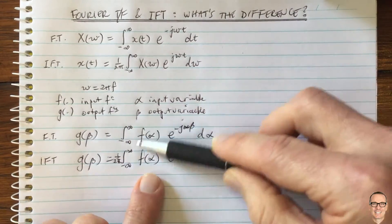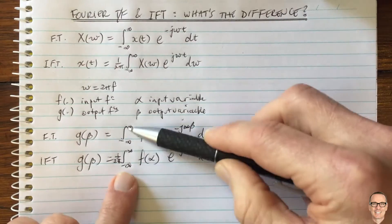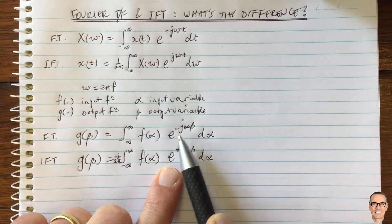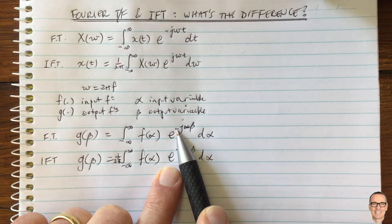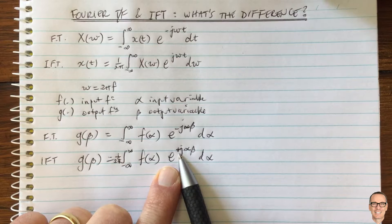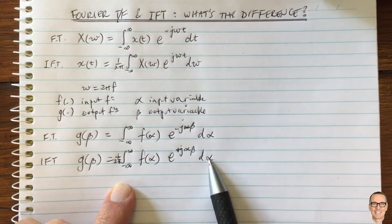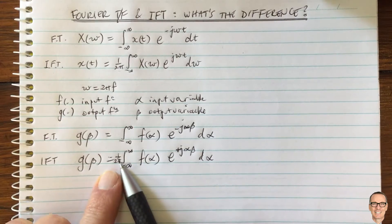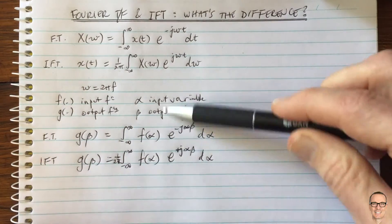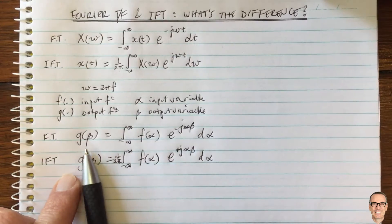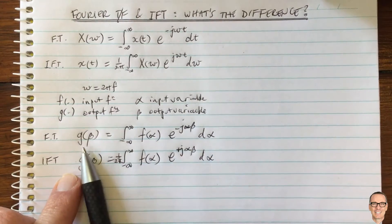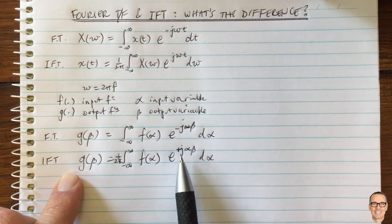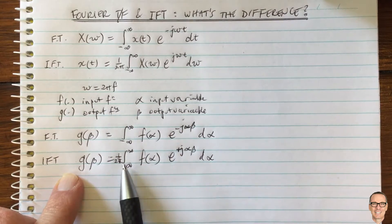Now looking at these two equations, we can see they really are very similar. We've got an output function g, an input function f, the same integral, and d alpha in both cases. The only difference is that the Fourier transform has a negative sign in the exponential, while the inverse Fourier transform has a positive. Otherwise it is exactly the same functional form, except for the scaling factor in the inverse Fourier transform.